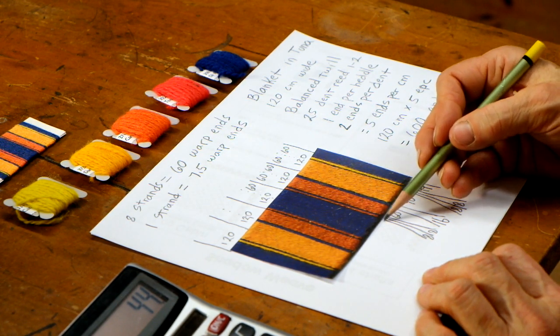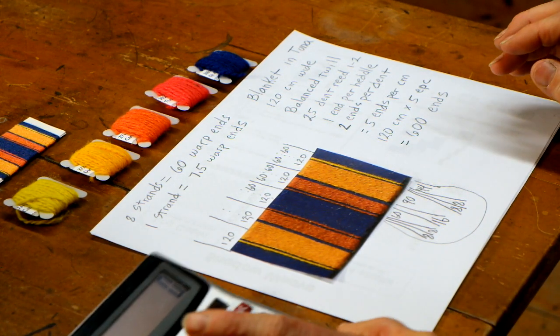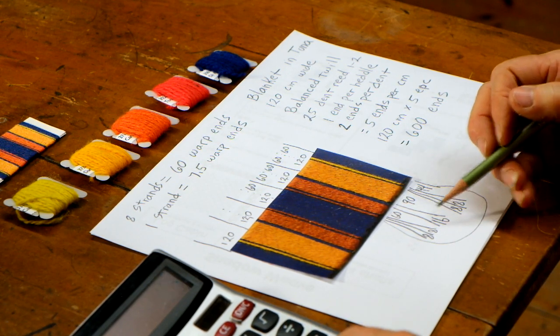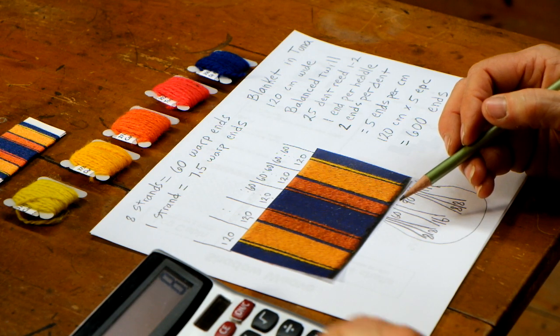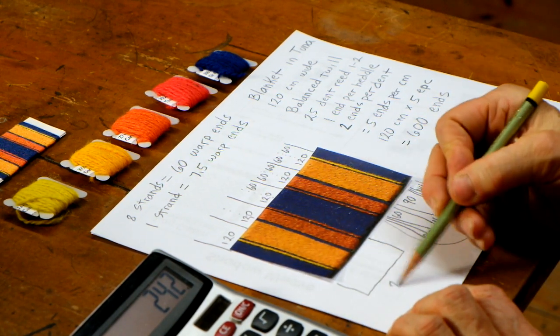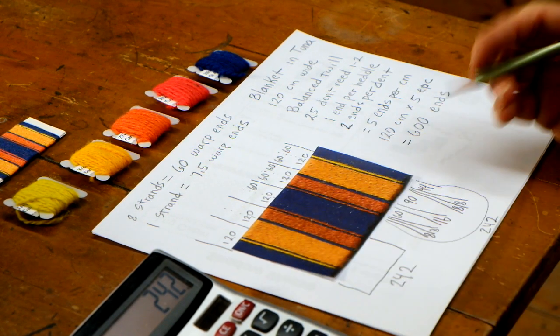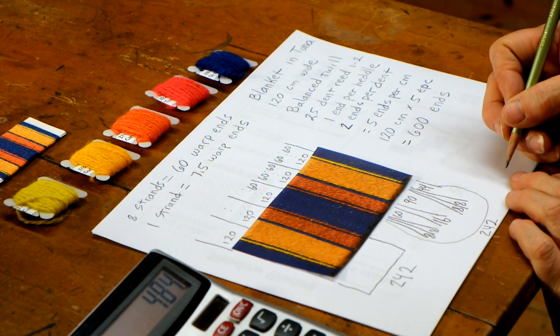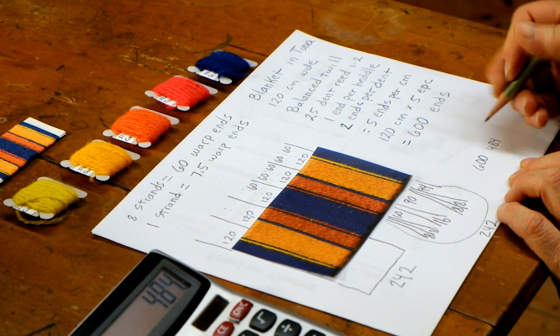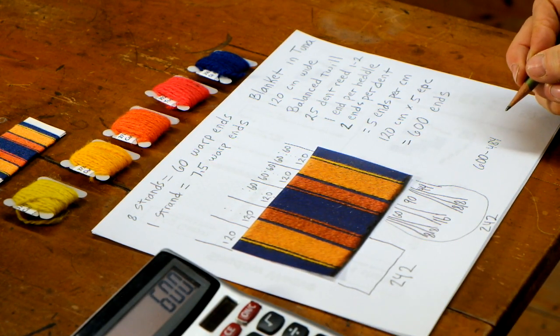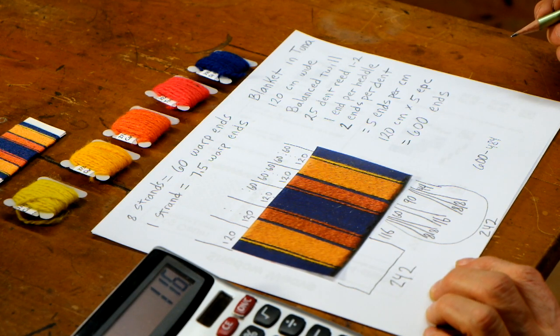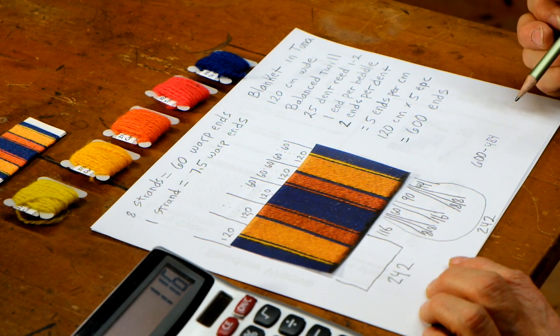And so now what I can do is add all of this together and see how many I have. So 44 plus 8 plus 8 plus 8 plus 90 plus 16 plus 60 plus 8 plus 8 is 242. And that means this over here is also 242. So if I add 242 plus 242, I get 484. How many ends do I have total? 600. So 600 minus 484 equals 116. So now I have my total number of warp ends of each color all mapped out.